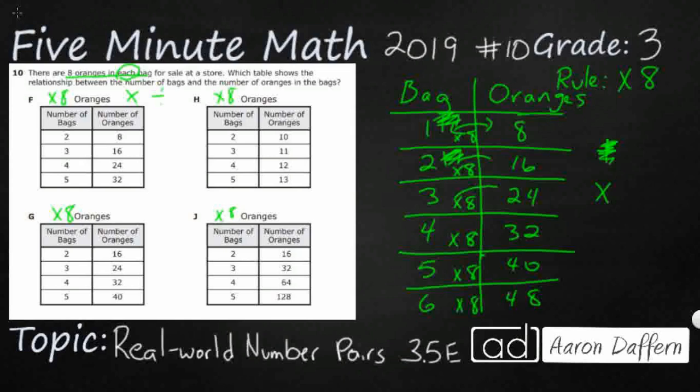So let's see. Let's just put times eight down here on F. Let's see if that works. No, times eight doesn't even get close. Two times eight is 16, not eight. So now F is nowhere near close. Now take a look at my eight, 16, 24, 32. This is counting by eights just fine. But the problem is, is the number of bags are off. This would be better if this were one, two, three, and four.